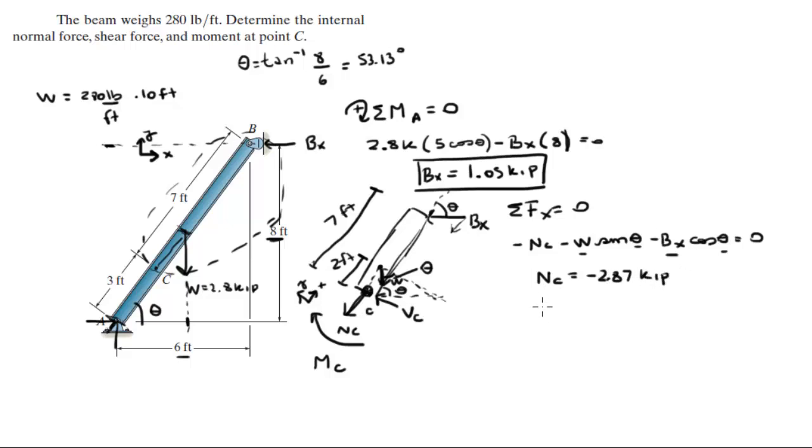which means that is 2.87 kilopounds going to the right. So let me correct that right here. The normal is going up. Let me put corrected in the diagram.